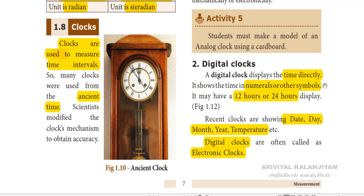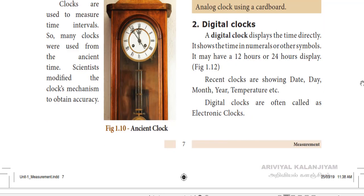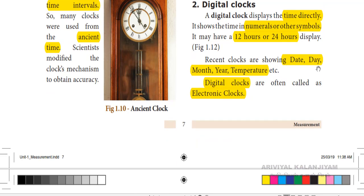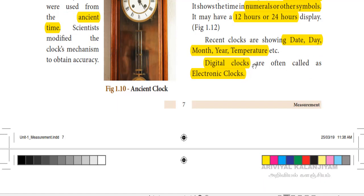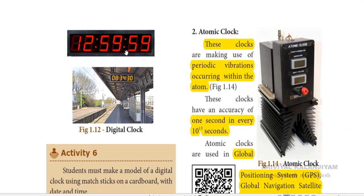Digital clocks display the time directly. They show the time in numerals or other symbols. Digital clocks may have a 12-hour or 24-hour display. Recent clocks also show the day, month, year, and temperature. Digital clocks are often called electronic clocks, and wristwatches also use this type of display.